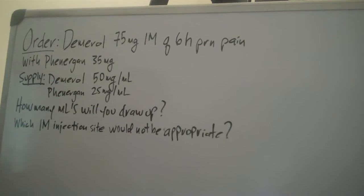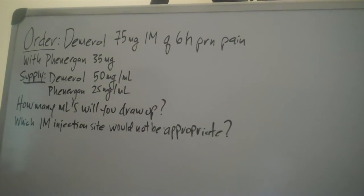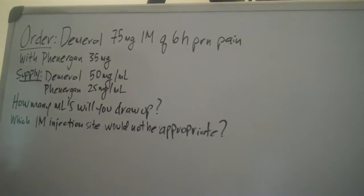Pharmacy has supplied us with Demerol 50mg per ml and Phenergan 25mg per ml. Now, how many ml are we going to draw up?